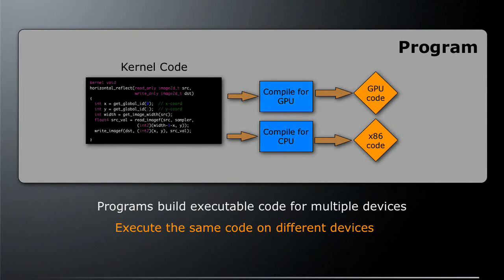Let's say we have a program object. We have some kernel code shown on the left. We're going to compile it for the GPU, and that will give us GPU code. But if we also have an OpenCL device using the AMD CPU, we'll compile it for the CPU and get x86 code. So we'll have two different kernel binaries — one running on the GPU and one on the x86 CPU. Programs build executable code for multiple devices, so the same high-level code can run on multiple devices compiled at runtime. You could have a GPU, x86 CPU, and even a DSP, giving you three different sets of code.